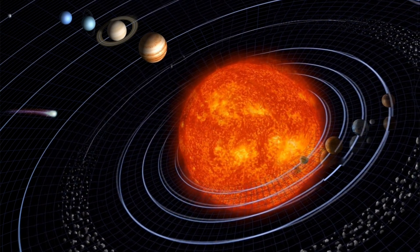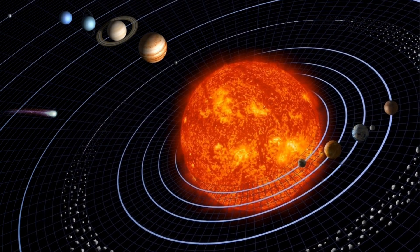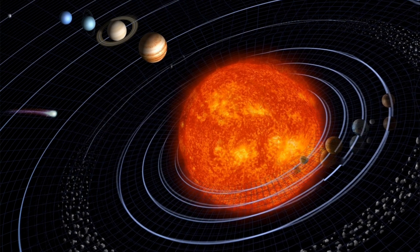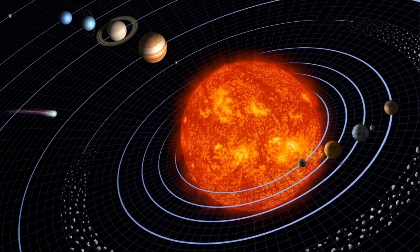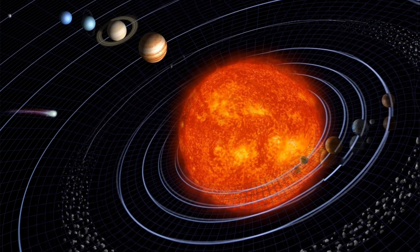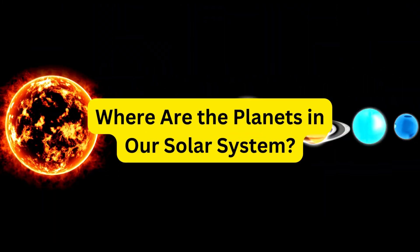There are also moons, asteroids (small rocky bodies), and comets made of ice, dust, and rock in this family. It's like a cosmic dance with everything moving in a special path around the sun.